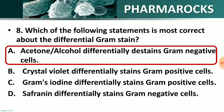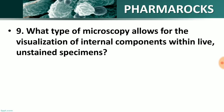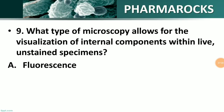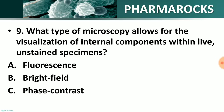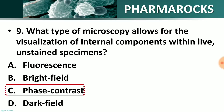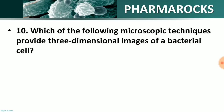Question number 9: What type of microscopy allows for the visualization of internal components within live unstained specimens? Options: A) fluorescence, B) bright field, C) phase contrast, D) dark field. The right answer is option C — phase contrast microscopy. Phase contrast microscopy allows for the visualization of internal components within live unstained specimens.